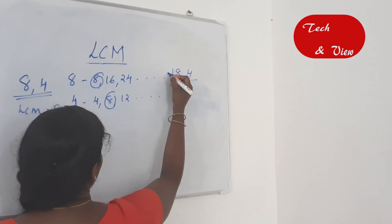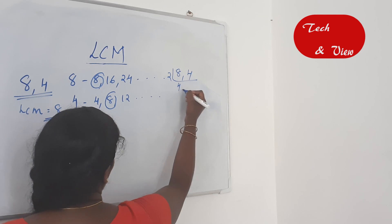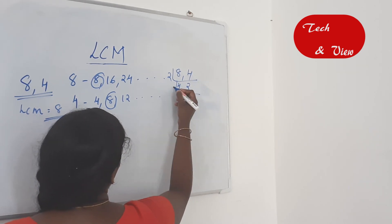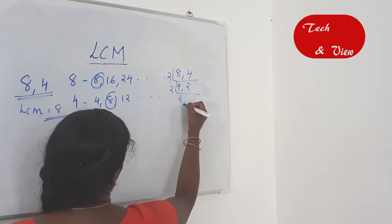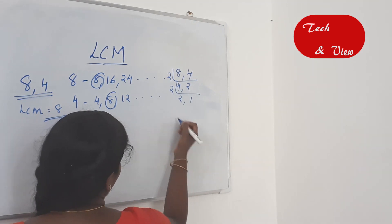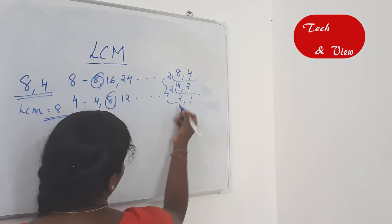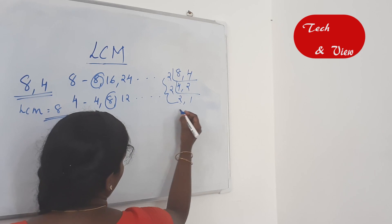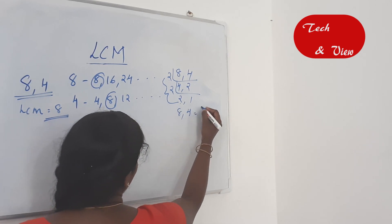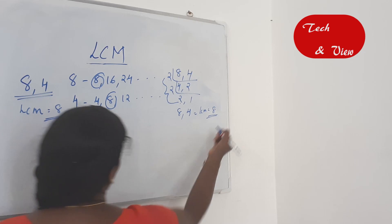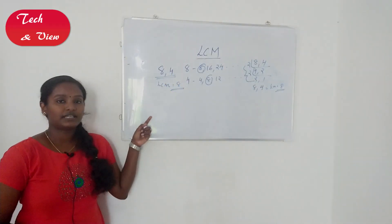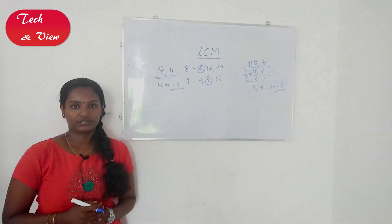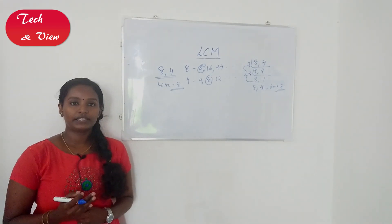We can also divide: 8 and 4, divide by 2 — 4 by 2 is 2, 2 by 2 is 1. Then we multiply all these factors: 2 and 2 is 4, 4 and 2 is 8. So LCM of 8 and 4 is 8. If we do multiples and factorization, it takes time — so let's learn a short form.